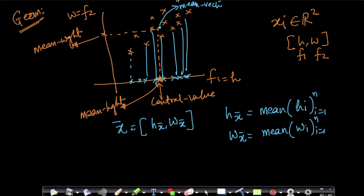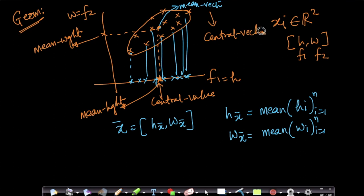So geometrically, if I have a bunch of points, the mean vector is a central vector or central data point — just like the mean is a central value for scalars, the mean vector is a central vector. That's the interpretation of a mean vector. We'll also see other things like the covariance of a data matrix later in this section.